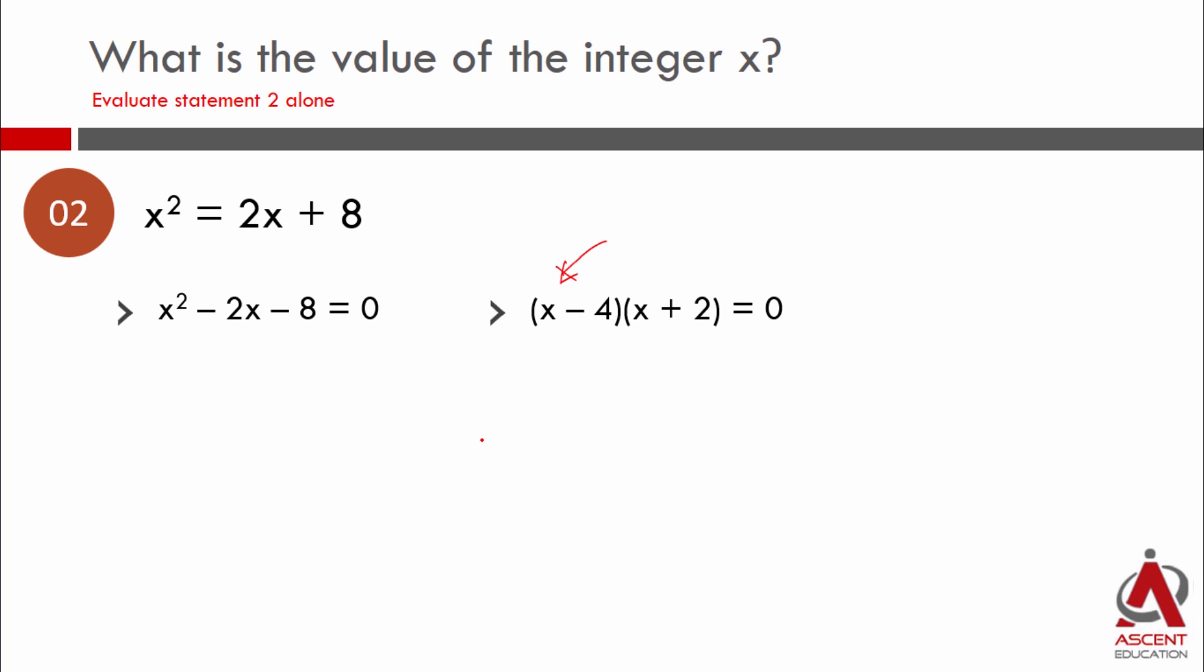From this factorization, we find the roots: x could be 4 or x could be minus 2. This means we're not getting a unique answer for the value of x, which means statement 2 is not sufficient.